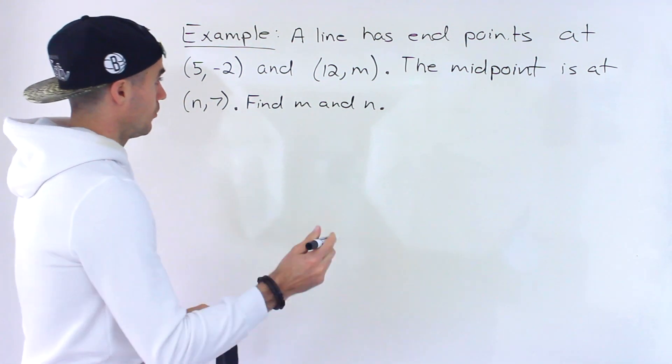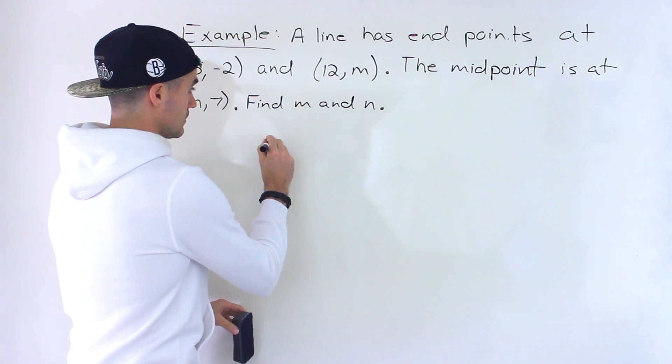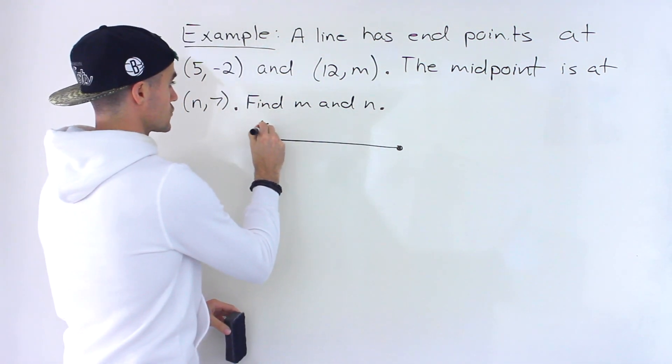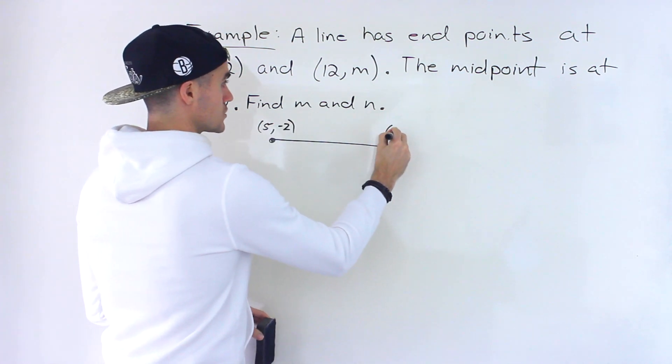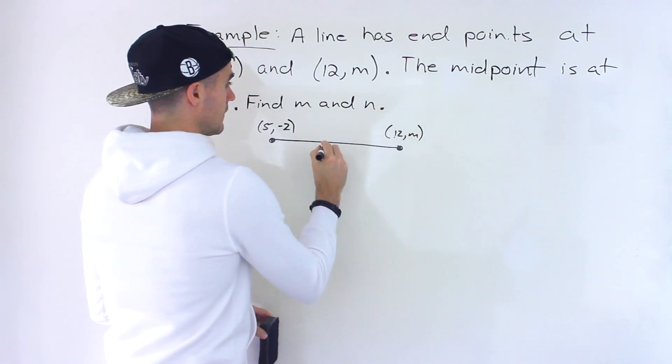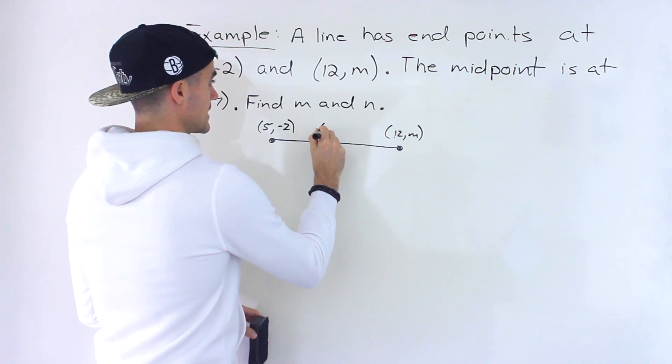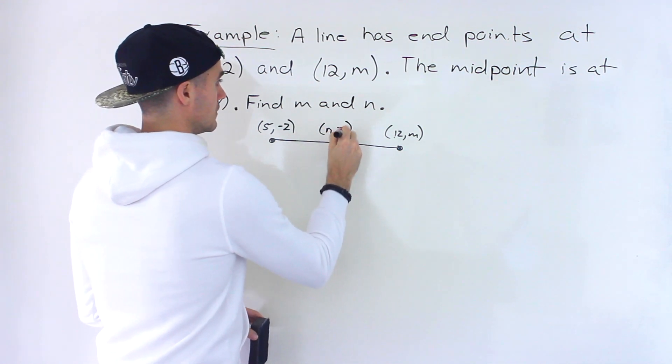So we're given the endpoints of a line. Let's actually just draw this out to give us a quick visual. So we have 5, -2. We got 12 and m. And then we have a midpoint that's going to be at n and 7.